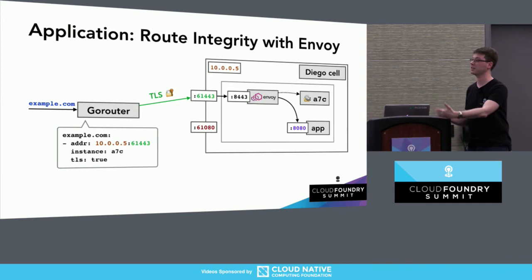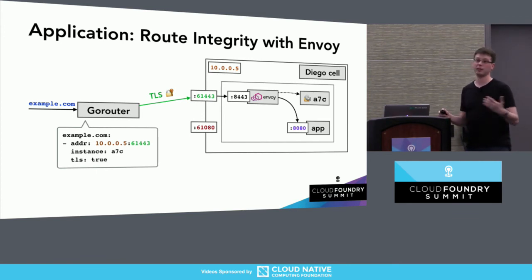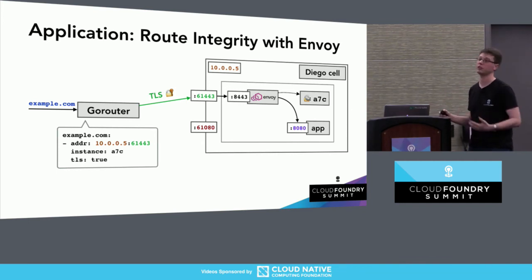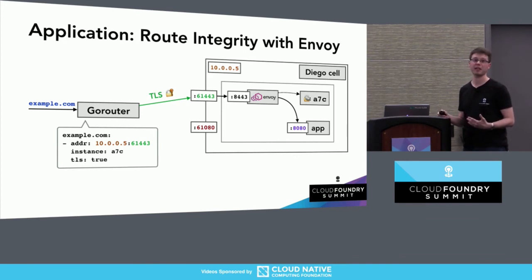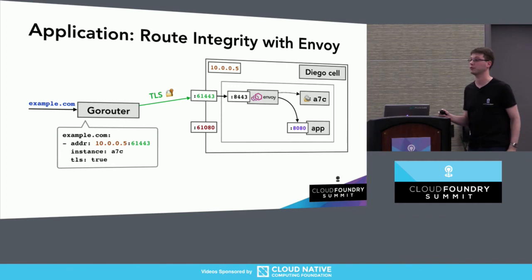Envoy's dynamic configuration is great here: when we rotate the credentials, we just dynamically reconfigure Envoy with the new TLS context. Existing connections continue transmitting data until they're closed, and new connections get the new set of credentials. This is an optional feature inside CF deployment at the moment — you can use an ops file to opt in. We're doing some fine-tuning on accounting for the memory usage of these Envoy proxies, but if you're willing to give it a little extra room, this can greatly improve the security and resilience of your routing tier.